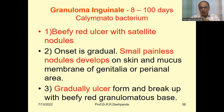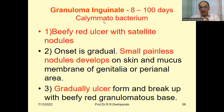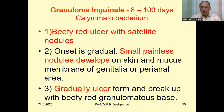Now I will discuss another condition called granuloma inguinale. Previously it was grouped with LGV but this is a separate entity — granuloma inguinale. The incubation period is 8 to 80 days and this is a Calymmatobacterium infection. The clinical features include a beefy red ulcer with satellite nodules. Onset is gradual. Small painless nodules develop on the skin and mucous membrane of the genitalia or perianal region, and gradually an ulcer forms with a beefy red granulomatous base.